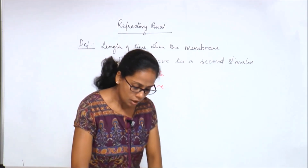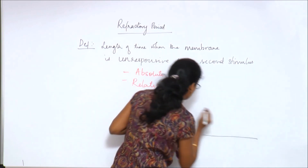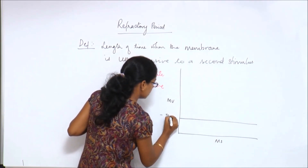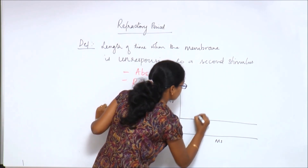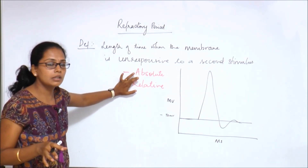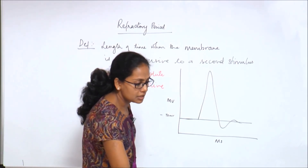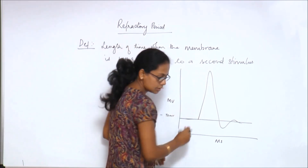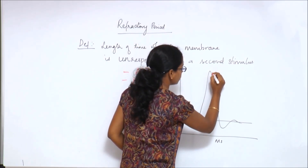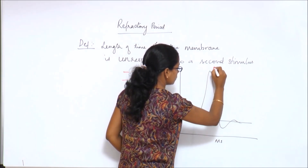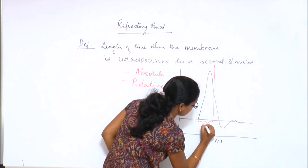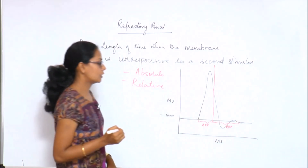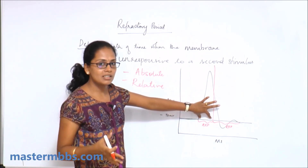To understand this, draw the graph of an action potential — millivolts against milliseconds — with the resting potential at minus 70 millivolts. The absolute refractory period covers the entire depolarization phase plus one-third of repolarization. If you divide the repolarization into three parts, the first one-third marks the end of the absolute refractory period. The remainder of repolarization constitutes the relative refractory period.